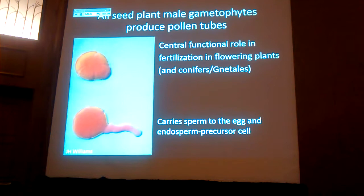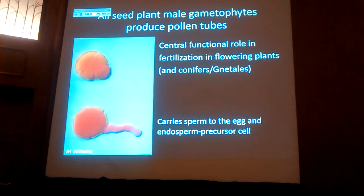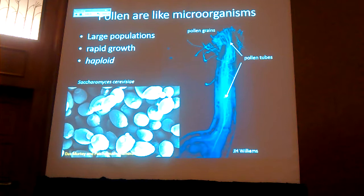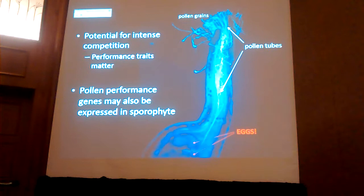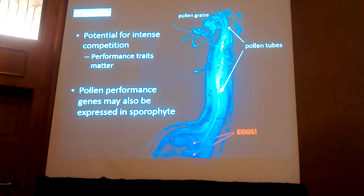The pollen grain has a central functional role in fertilization in flowering plants and also in conifers. What it does is it grows a tube that carries sperm directly to the egg and to the endosperm. Pollen have been compared to microorganisms — here you can see a large population of pollen grains all extending pollen tubes down the style, racing after the eggs at the bottom. Therefore there's a potential for intense competition, and the main performance trait we think about with pollen tubes is pollen tube growth rate, which is what I'm going to focus on today.